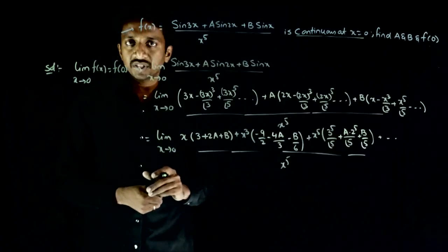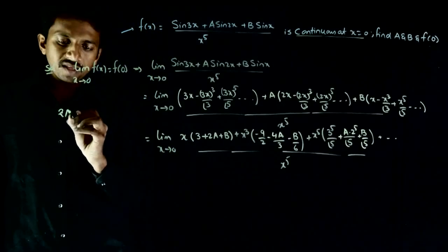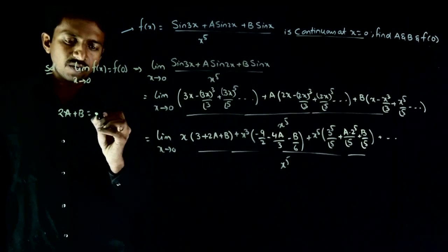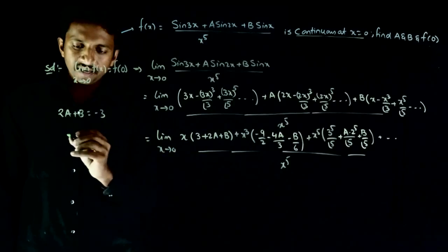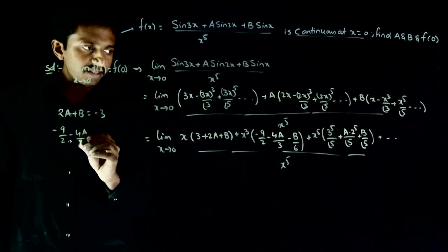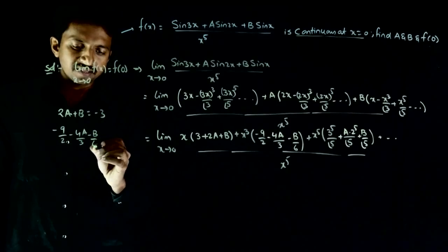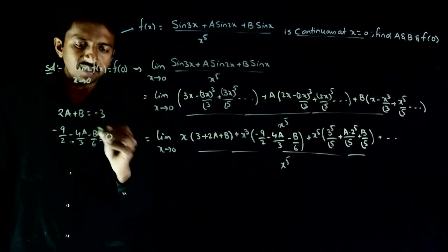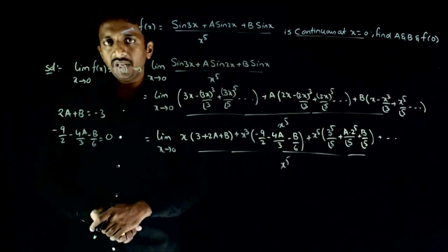So I have these equations: 2a plus b is equal to minus 3, and minus 9 by 2 minus 4a by 3 minus b by 6 is equal to zero. These are the two equations that you have.